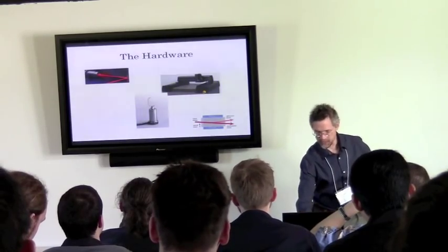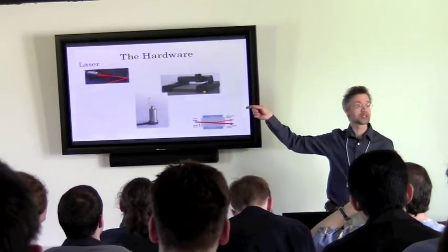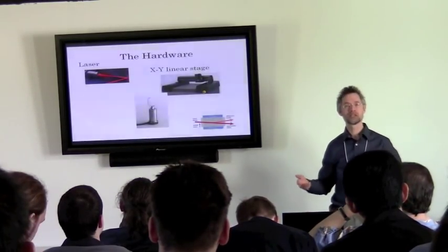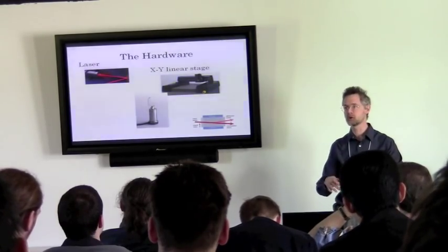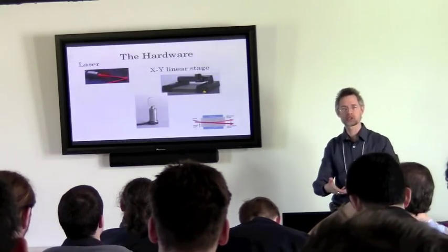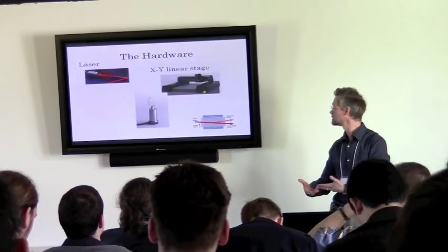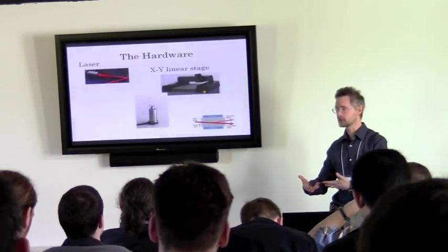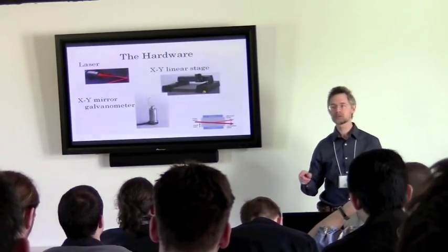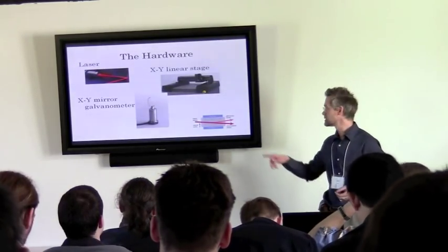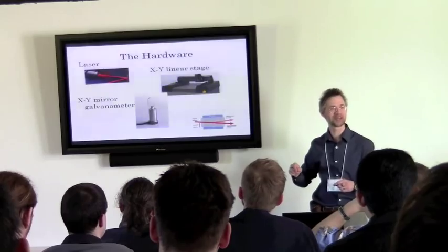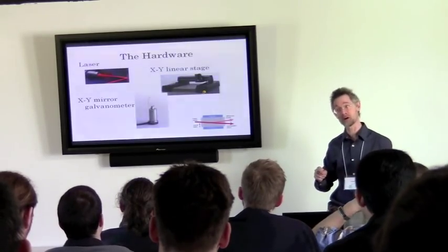The hardware involved includes, first of all, the laser. There's also an XY linear stage — two linear motors, one running in the X direction and one in the Y direction, that can shuttle the circuit around underneath the laser. Then what does most of the work with the laser is the mirror galvanometer. A pair of them is used — that is not an XY galvanometer, that is only an X or a Y galvanometer.